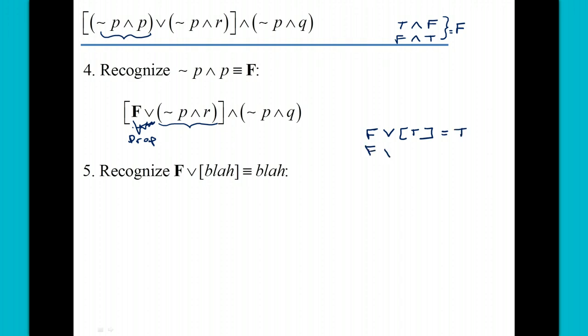So they match - whatever is here matches what the answer is. So you can just say then that you can drop off the false or and you just get the blah. And so there we have our statement at this point: not P and R, not P and Q, with an and in between.